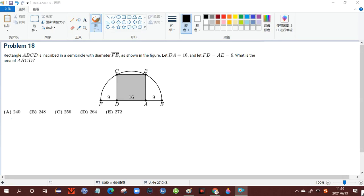Rectangle ABCD is inscribed in a semicircle with diameter FE. As shown in the figure, let DA is equal to 16 and FD is equal to AE is equal to 9. What is the area of ABCD?